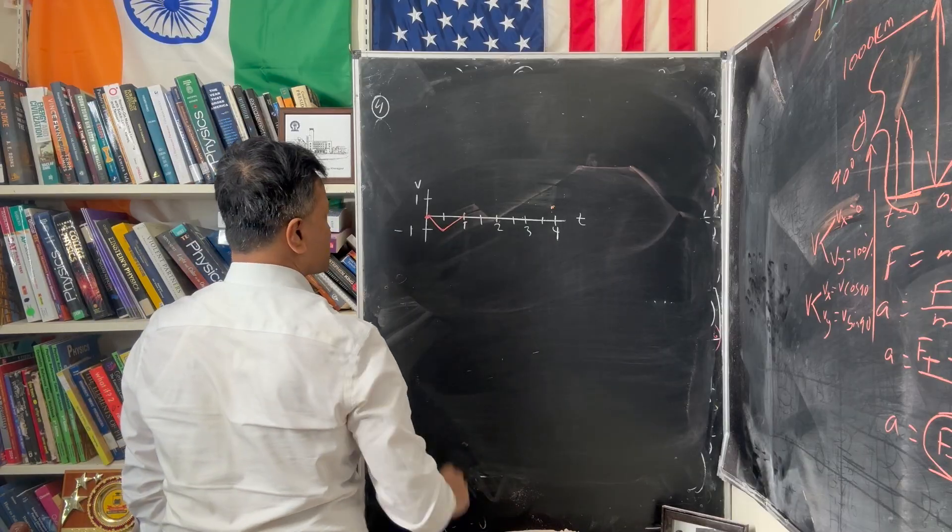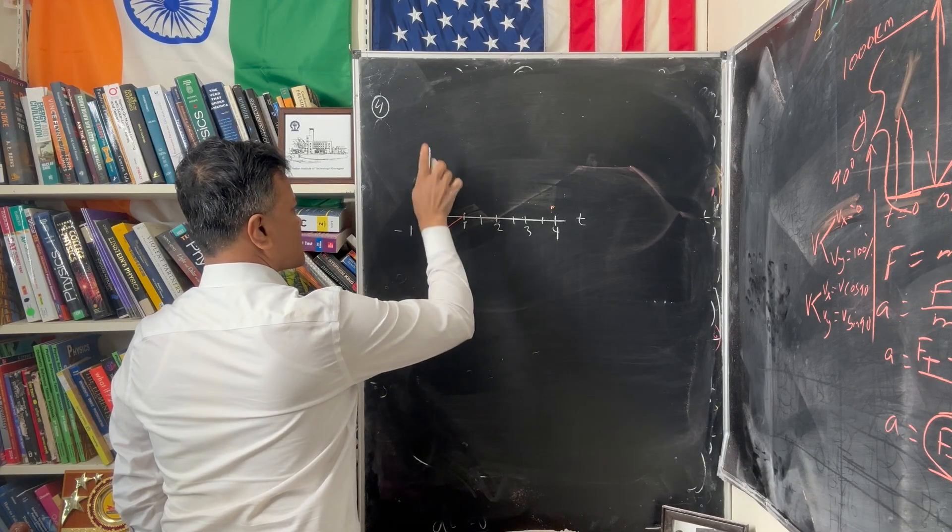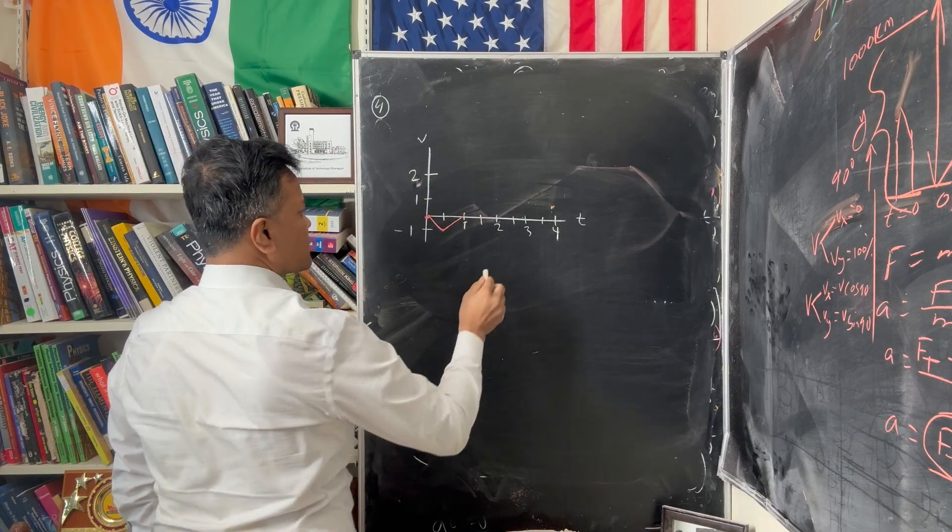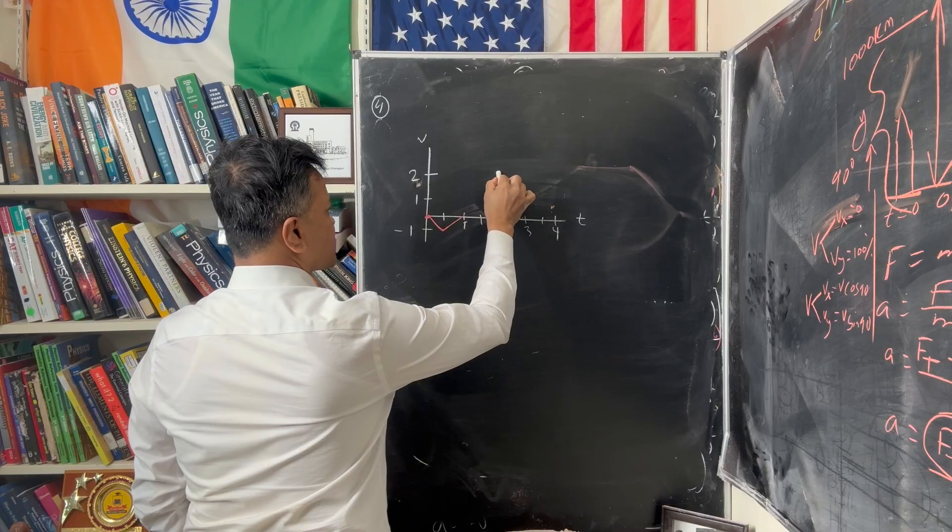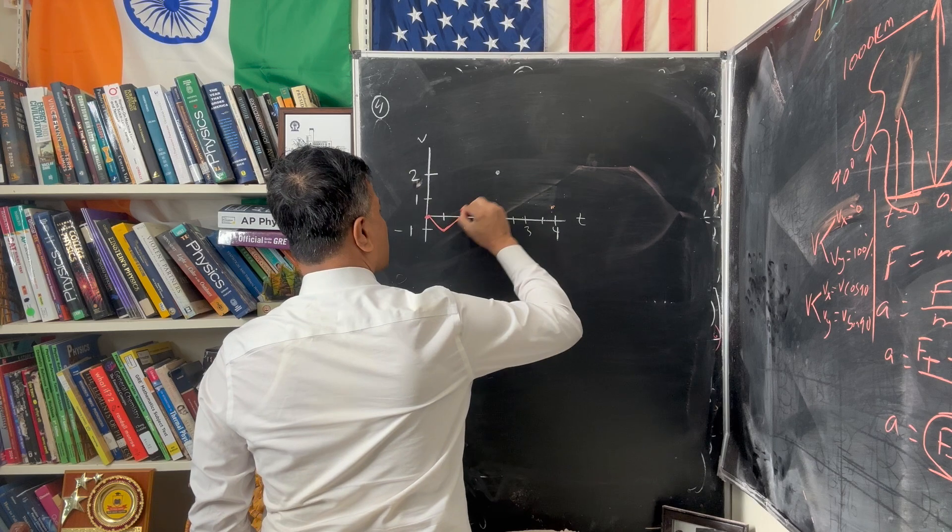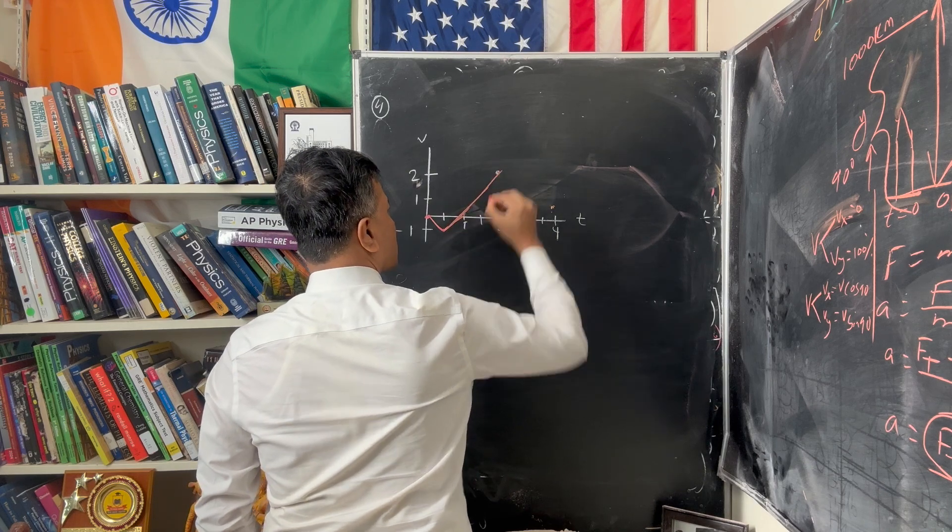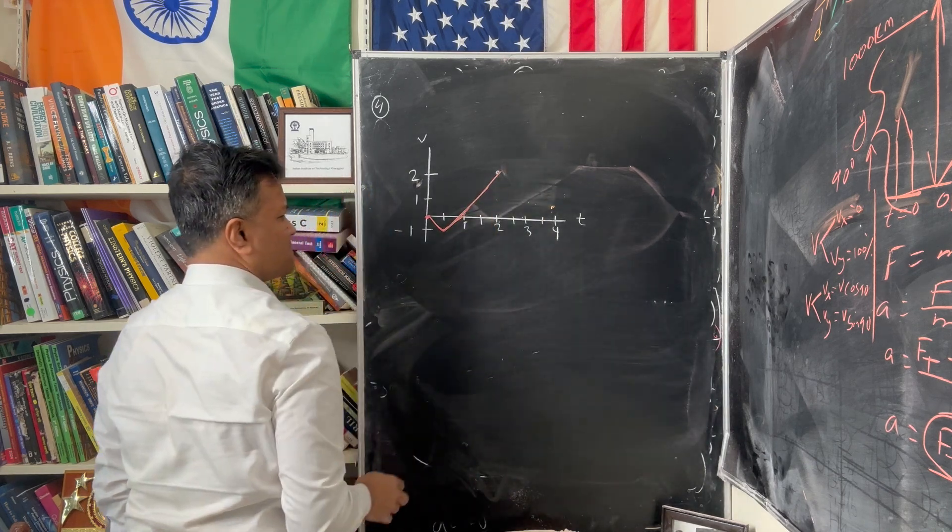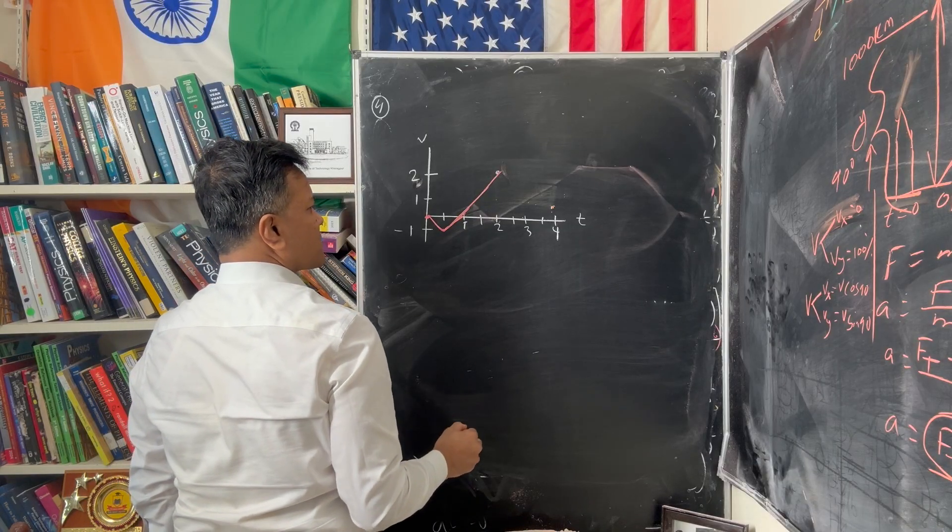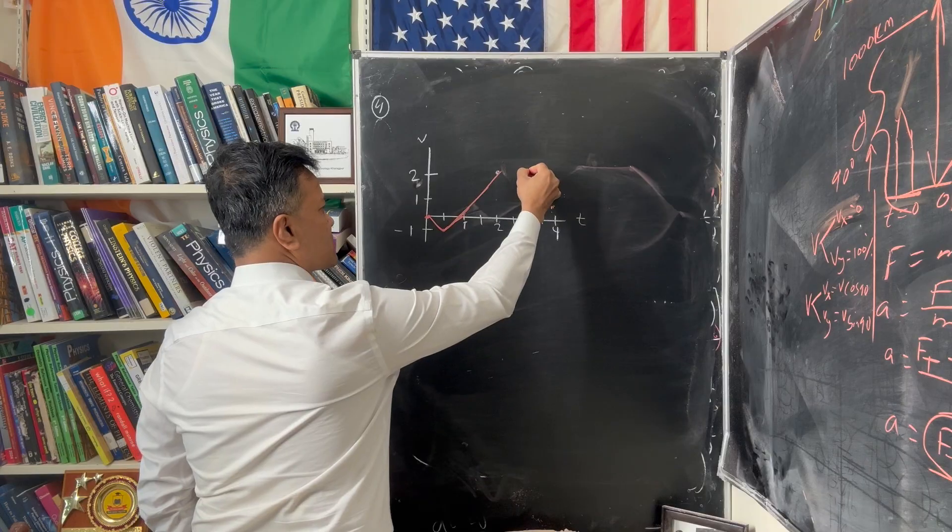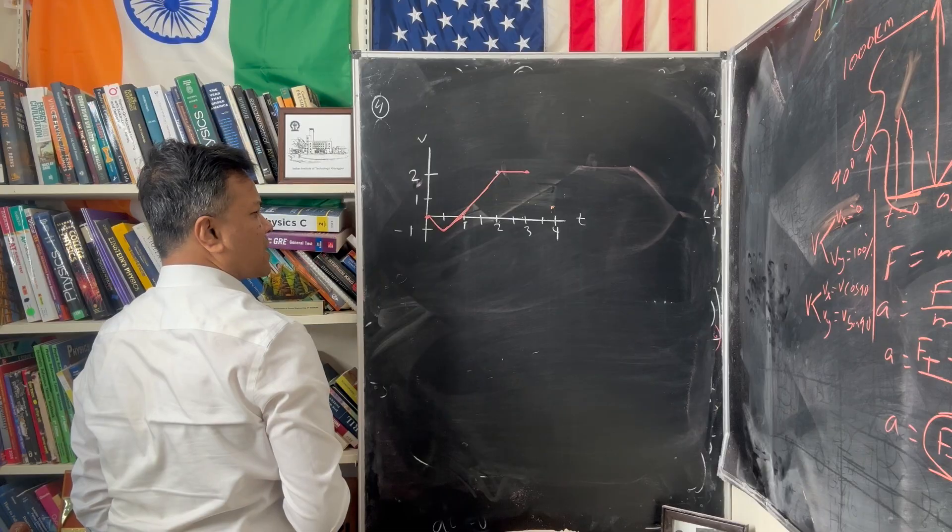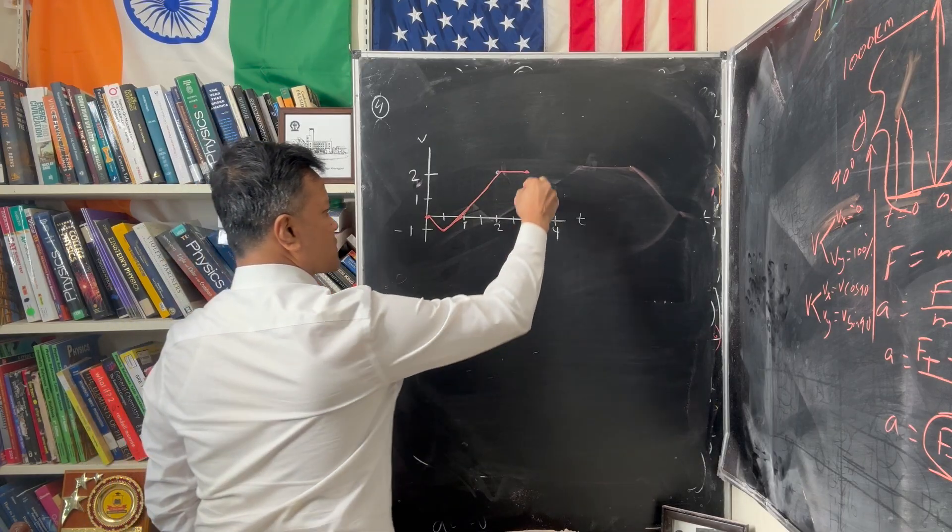It moves with constant acceleration from 0.5 second to 1 second, continuous with constant acceleration. Let's move to 2 meter per second, so 2 comma 2. It continuously moves with constant acceleration from 1 second to 2 seconds. From 2 seconds to 3 seconds, it moves with constant velocity. From 3 seconds to 4 seconds, again it moves with constant acceleration.